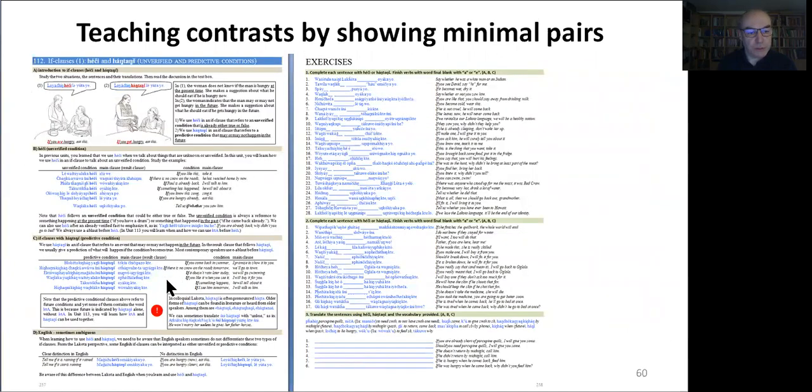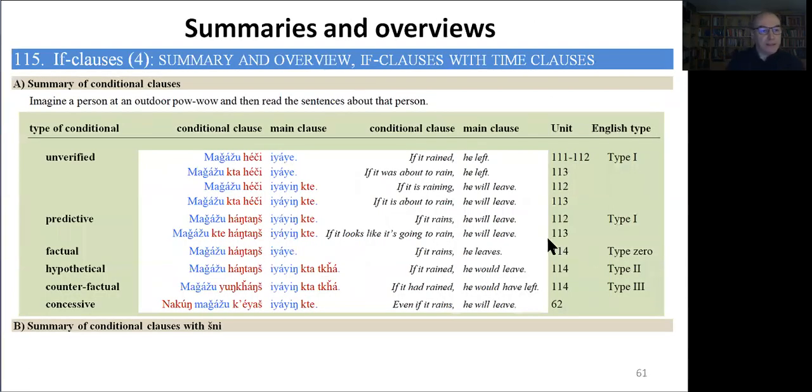The unit continues with additional information and with practice activities obviously. Very often at the end of a group of units we offer a summary or an overview as in this example where we provide the overview of the types of conditional clauses, where we list them and their examples and translations and the cross-references where they can be found. But notice also that we include the concessive conditional here even though it was actually not grouped with the other conditionals because it does not group with them structurally but it does group with them functionally. So we added here in this overview.